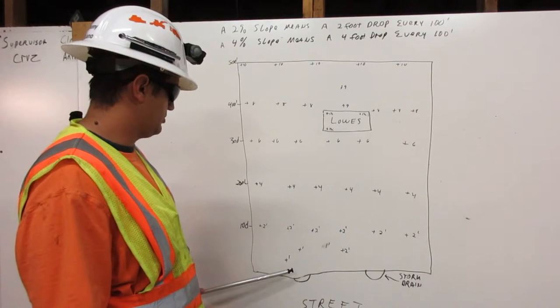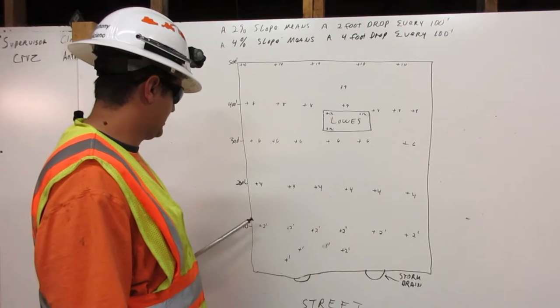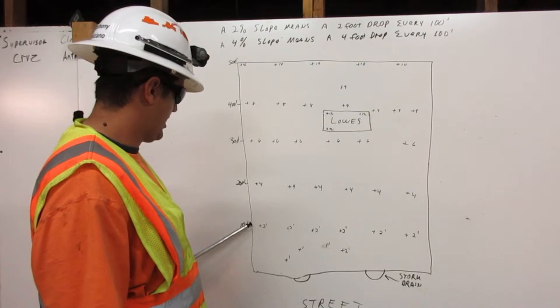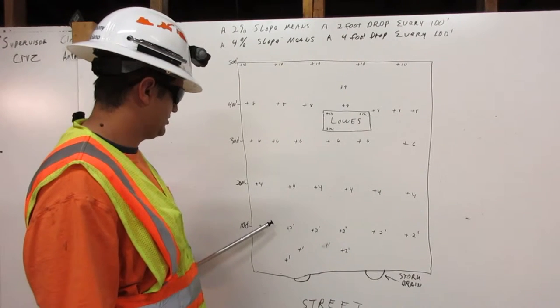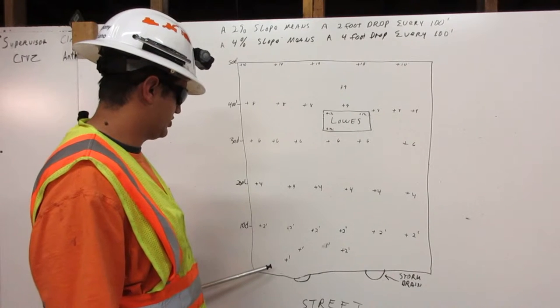For a 2% slope, 100 feet from the storm drains, which is here, we have plus 2 feet. It is 2 feet higher than the storm drains.